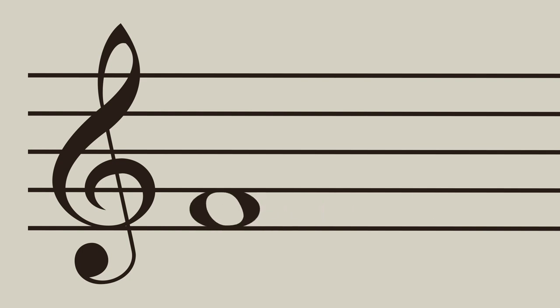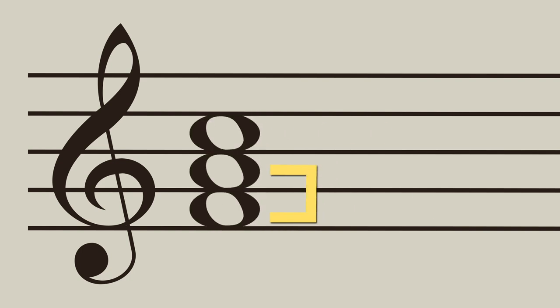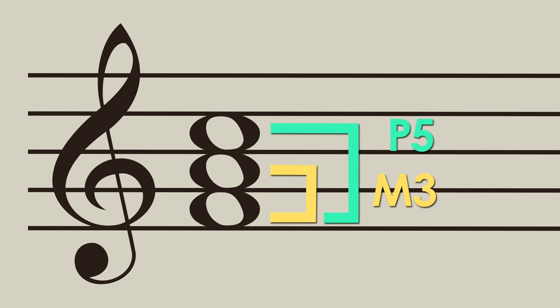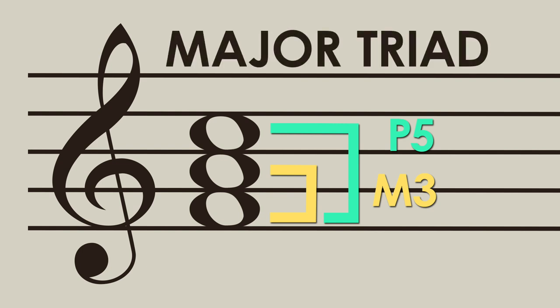Let's take this triad for example. The interval from F to A is a major third, and the interval from F to C is a perfect fifth. A triad with a major third and a perfect fifth is called a major triad.